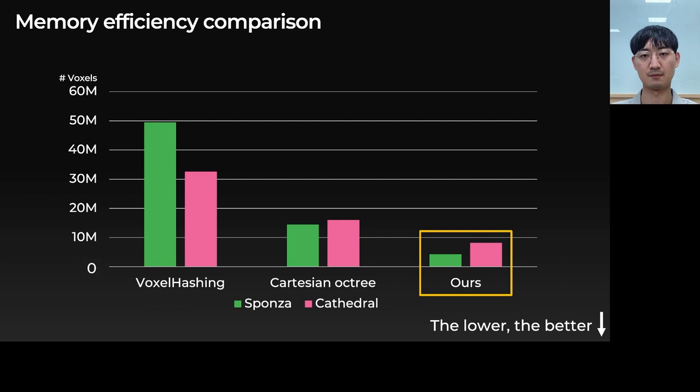This chart shows a memory efficiency comparison. Our binoctree requires the least number of voxels for both comparison scenes.